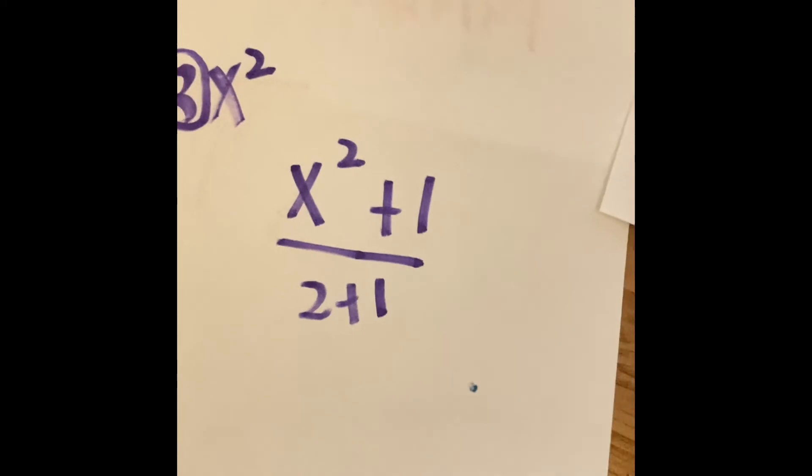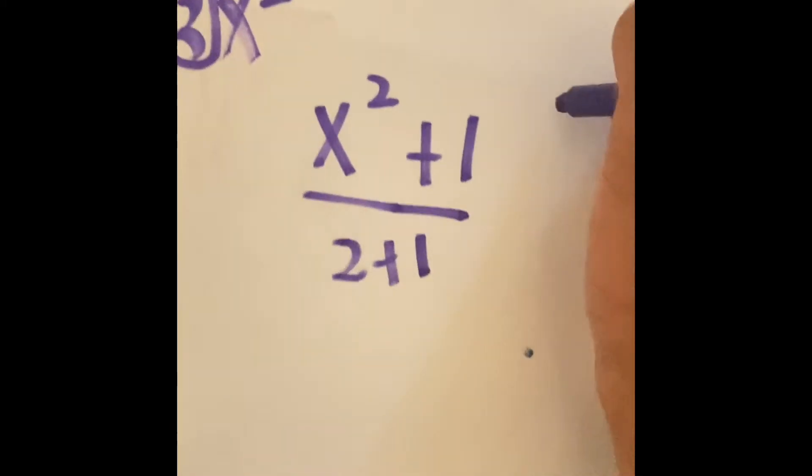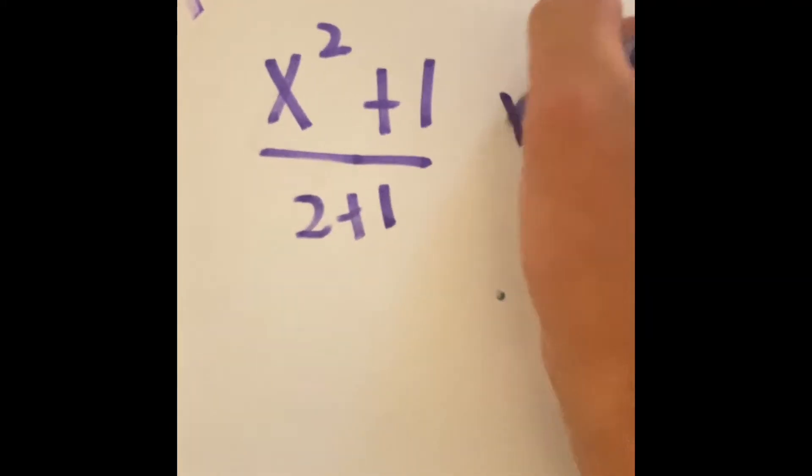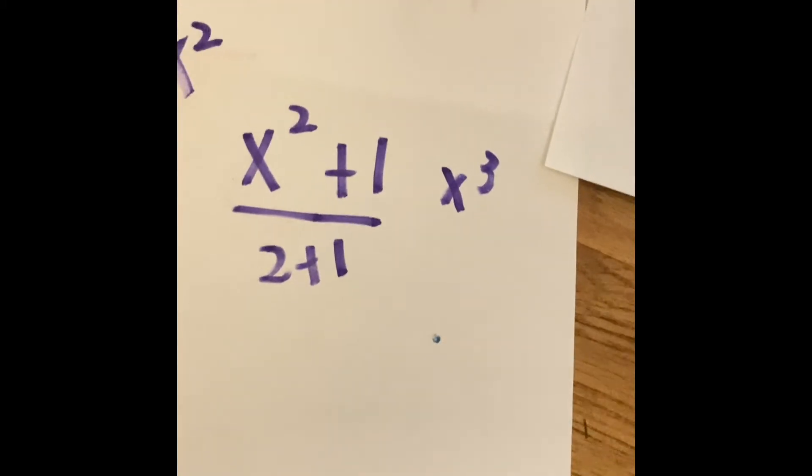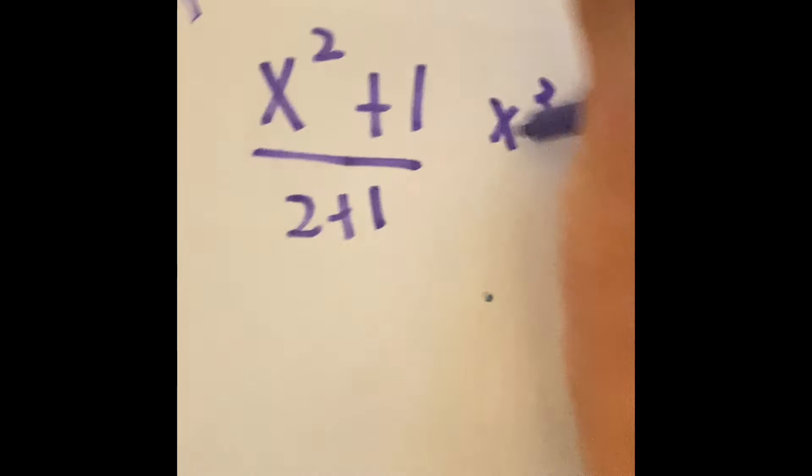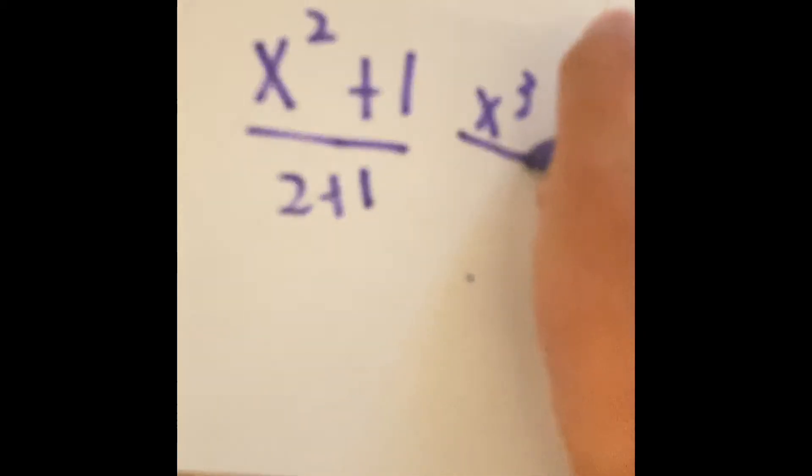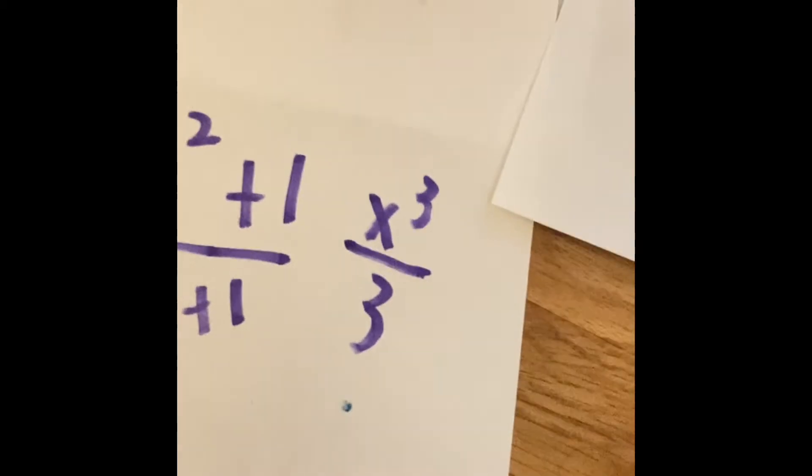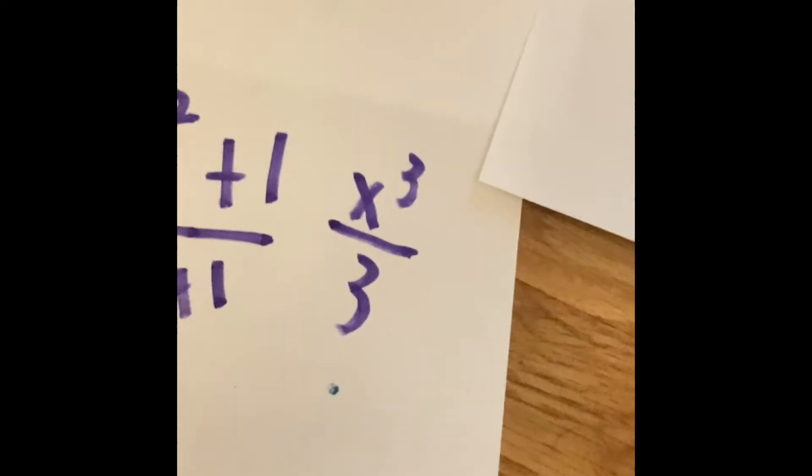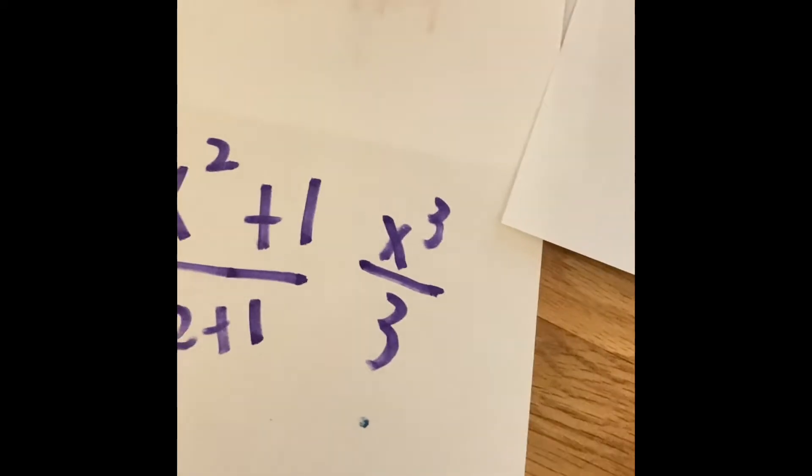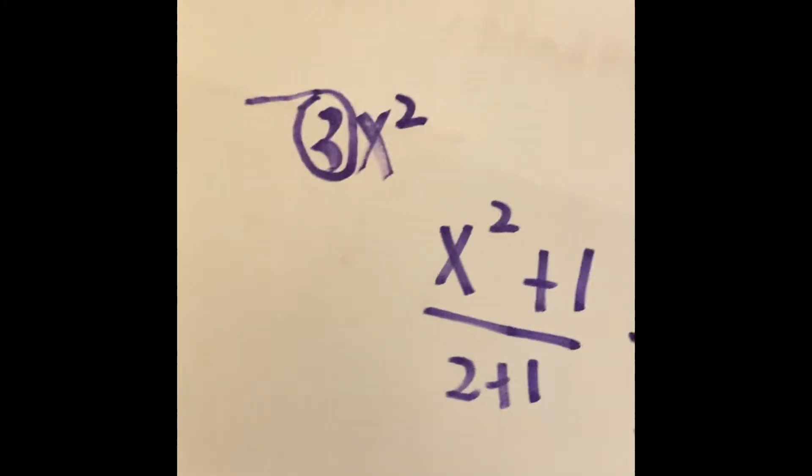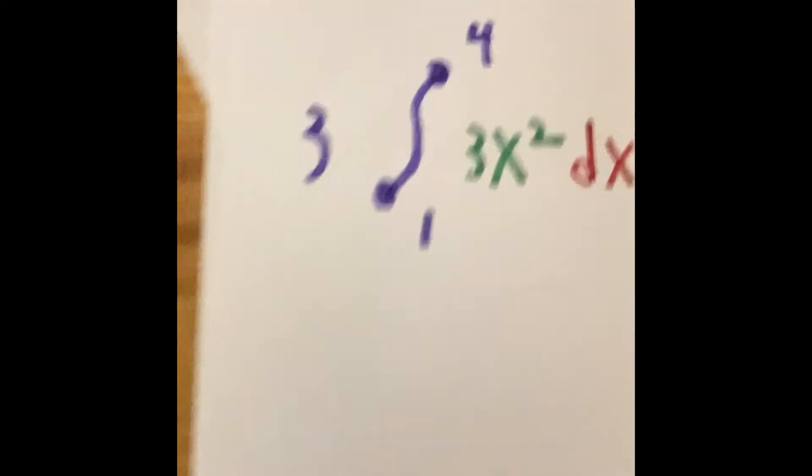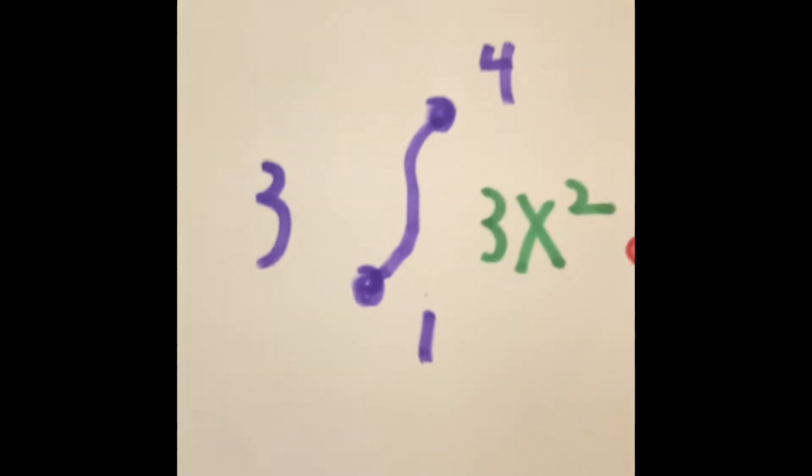2 plus 1 in the exponent is 3. So we're going to have x cubed on the top. Then we have 2 plus 1 on the bottom. And 2 plus 1 also 3 is 3. So we have x to the third power. Divide that by 3. But there's a catch that we did. Do you remember we put that 3 right in front of the integral to remind us about something?